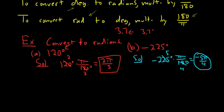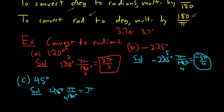And let's do one more. Why not? (c). How about this one? 45 degrees. Same thing. We have to multiply this one by π over 180. This turns out to be a very special angle, which we'll study later. So in this case, 45 goes into 180 four times. So we just get π over 4. Very important angle, π over 4.